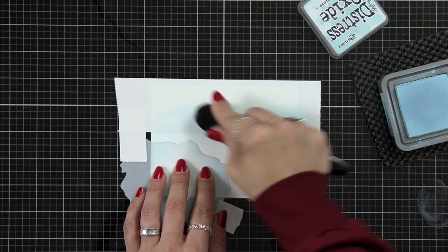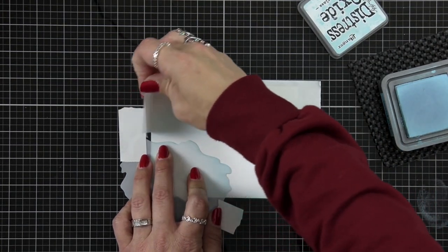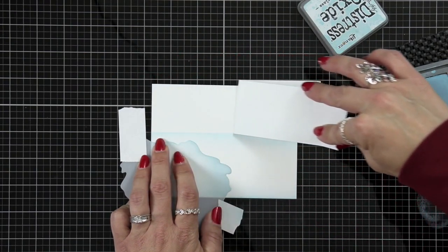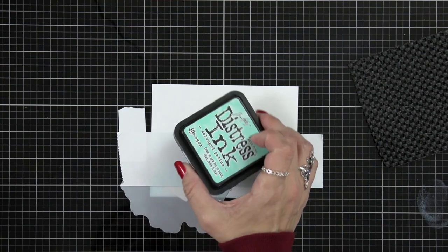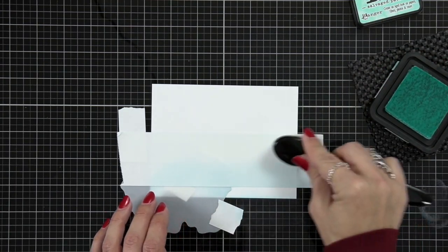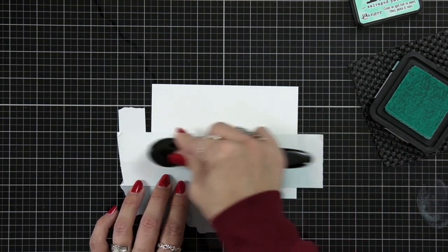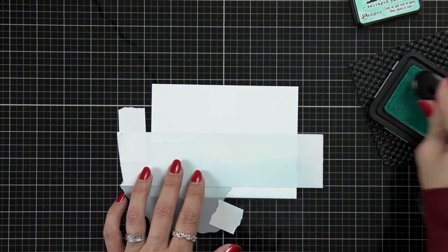Now I'm starting with that tumbled glass again and blending from the post-it tape down onto the other area of my cardstock just to give a light hue of color. Now that ends up kind of disappearing because my background turns out so dark so you could go back in and add some more color if you wanted to.